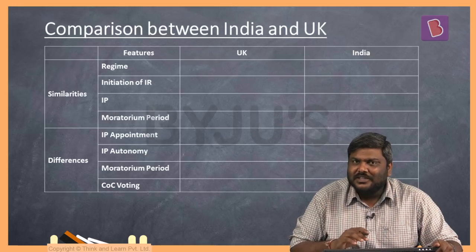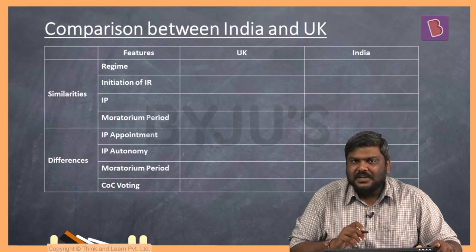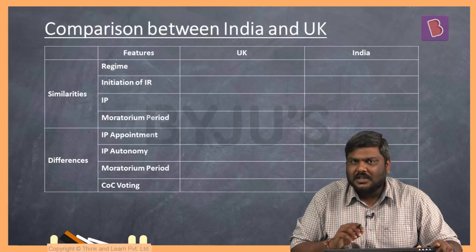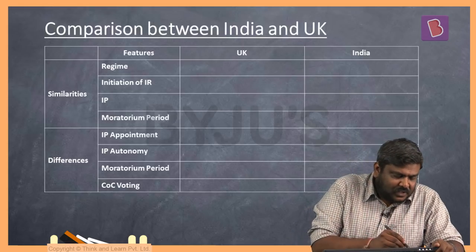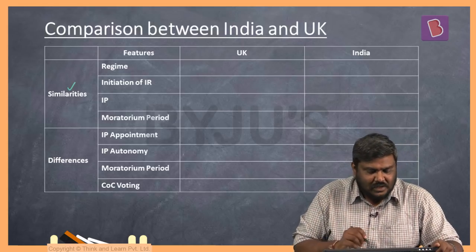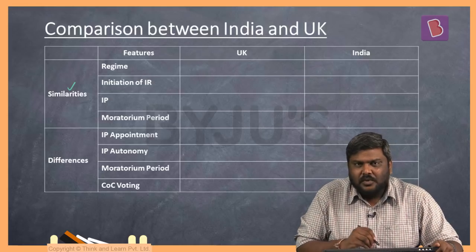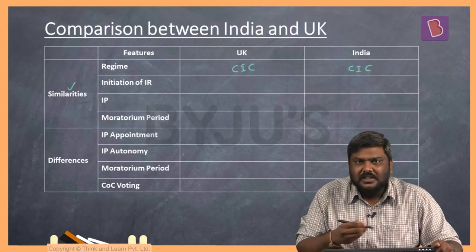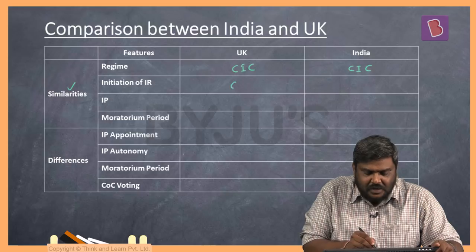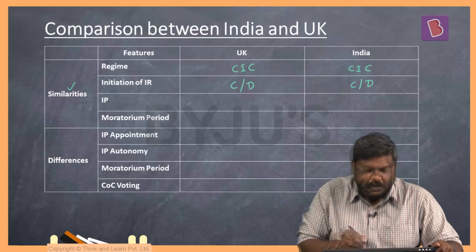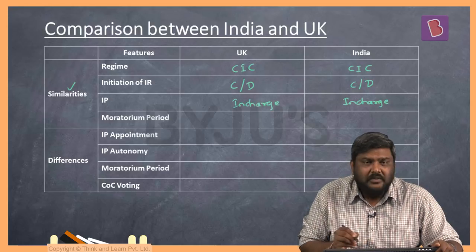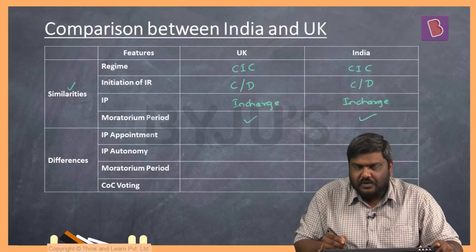Let's make a comparison between UK's law and India's law. UK's code is considered one of the best working models of insolvency resolution process globally. Starting with the similarities: in both codes, they follow the concept of creditor-in-control. Under both laws, the insolvency resolution process can be initiated either by the creditor or the debtor. Once the insolvency professional is appointed, they are in charge of the operations of the company. And under both codes, there is a concept of a moratorium period.